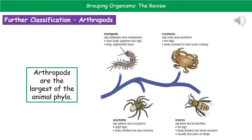Within the animal kingdom, the arthropods are the largest of all animal phyla, and they contain further divisions. Myriapods, such as millipedes and centipedes, have a long segmented body with legs on each segment. Crustacea, like crabs and wood lice, have ten legs and a hard outer coating. Insects like bees and butterflies have six legs, bodies divided into three sections, and usually two pairs of wings. Arachnids, such as spiders and scorpions, have eight legs and bodies divided into two sections.